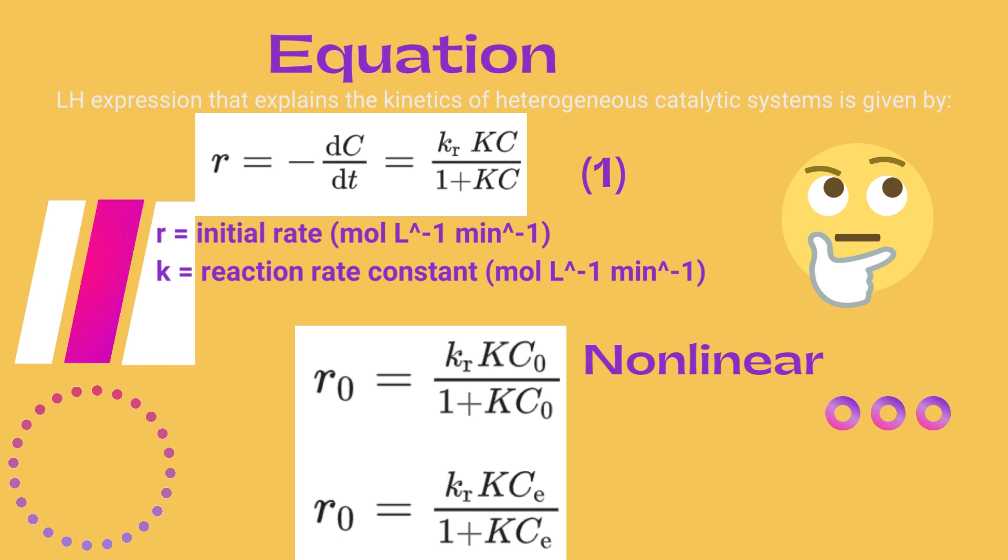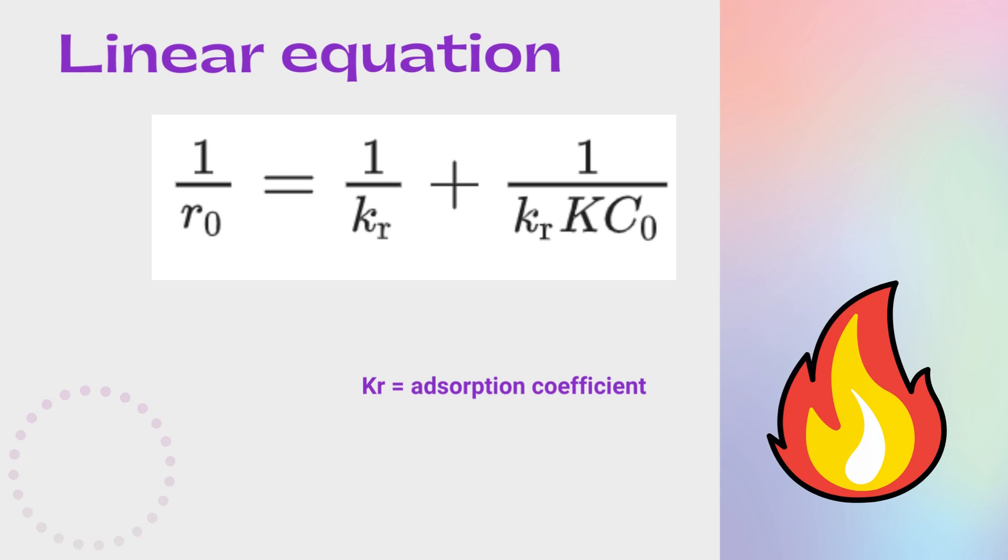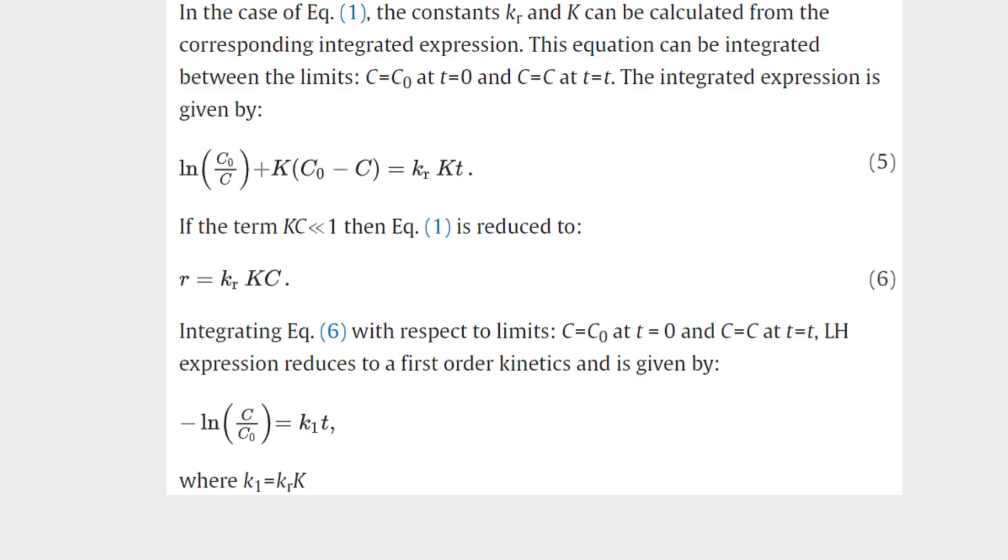So considering initial concentration C₀, we can finally write the linear equation for Langmuir-Hinshelwood like this: 1/r₀ = 1/kr + 1/(kr*K*C₀).